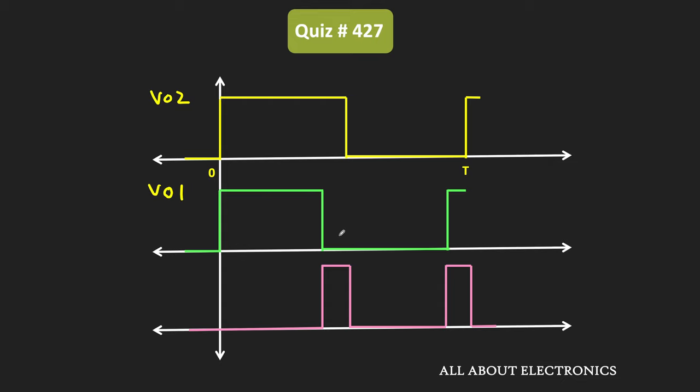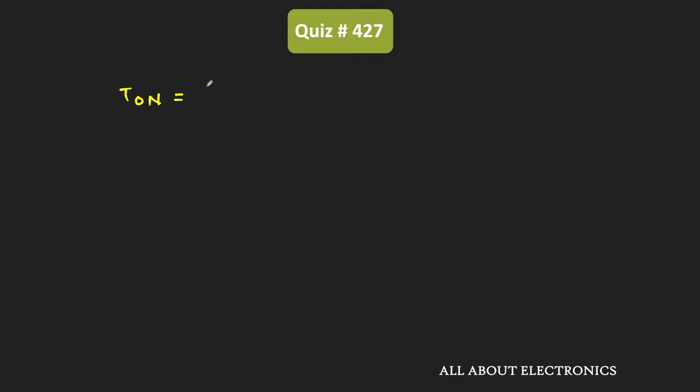If you see this time duration, it is equal to 36 degrees, because these two signals are phase shifted by 36 degrees — or in radians, π/5. That means in the entire time period, only during this time duration does the output of the XOR gate remain high. The one time period of the sinusoidal signal is equal to 2π radians, so out of that 2π, only during this duration is the XOR gate output high. Therefore, T_on equals π/5 plus π/5, while the total time duration T equals 2π radians.